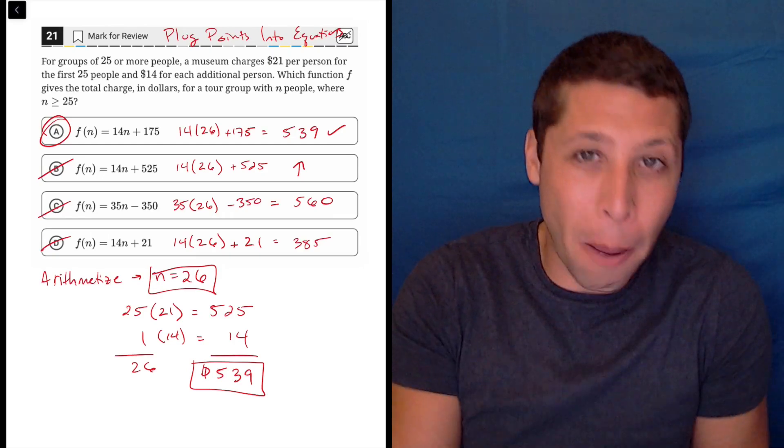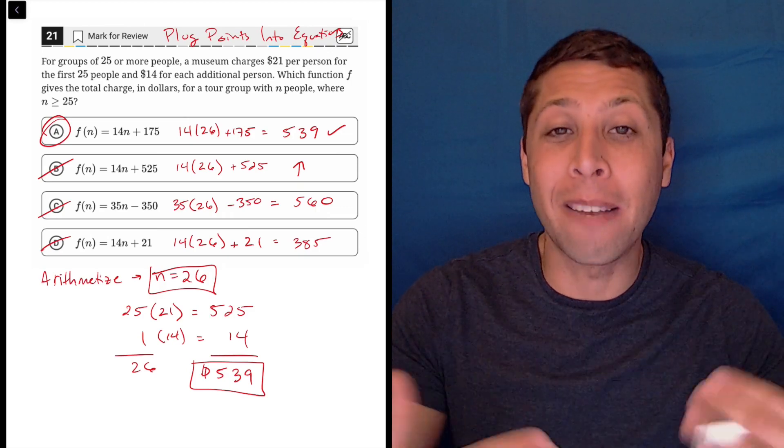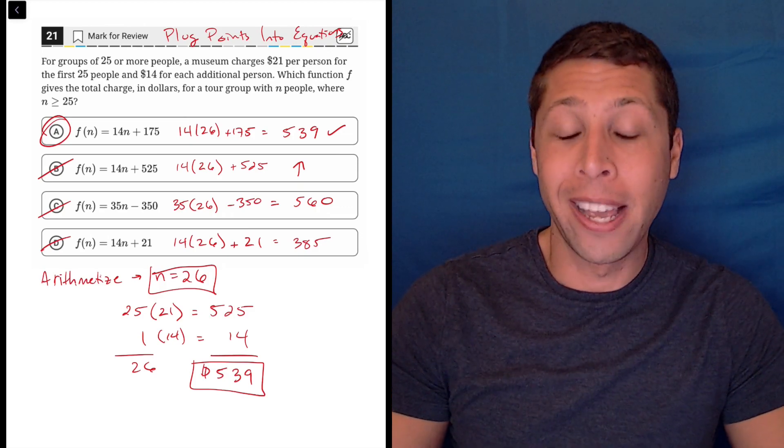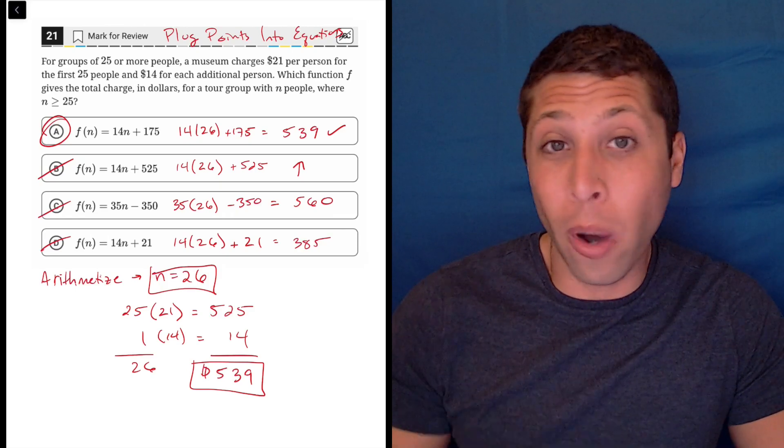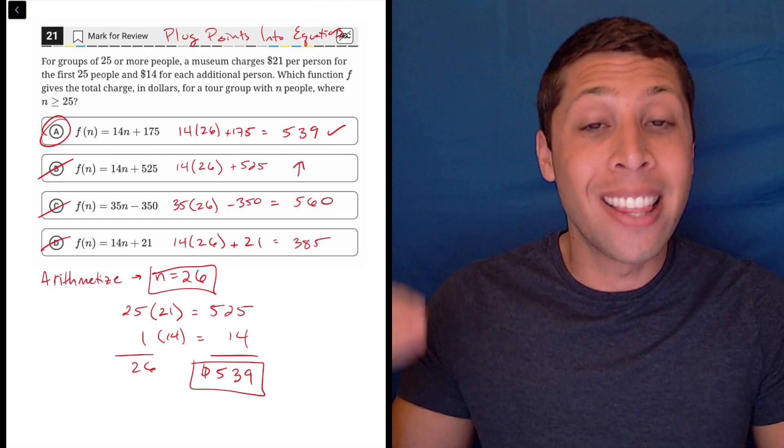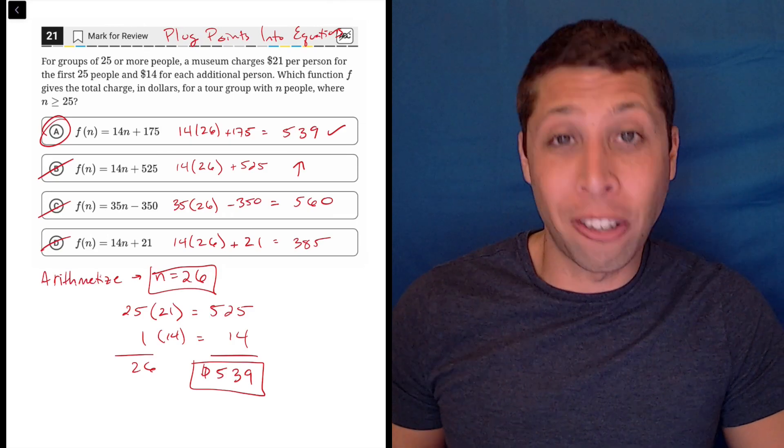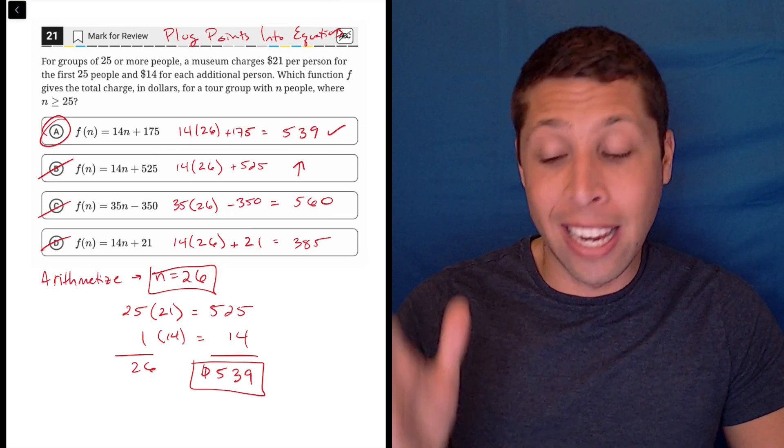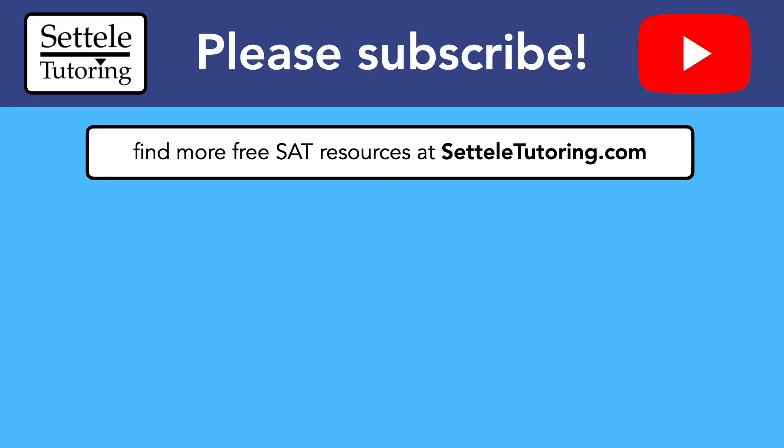Do real life stuff, come up with a number and pretend you are showing up at that museum with that number and then calculate based on what the rules are. It's so much easier. It's so much safer. You will feel more confident in your answer. And this is number 21 out of 22. This is supposed to be the second hardest question. And we got it just by doing a little multiplication and addition. Very simple, very easy, guaranteed points on a hard question. There you go.